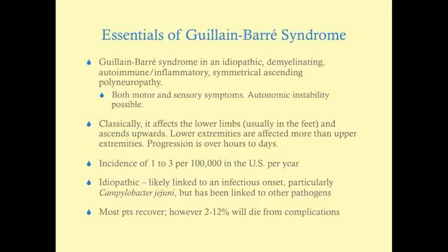It's demyelinating and autoimmune, meaning antibodies are created that attack the myelin sheath of the peripheral nerves. It's inflammatory — any autoimmune disease attacking parts of the body is an inflammatory process. It's symmetrical, meaning symptoms occur on both sides. Most importantly, it is ascending, which is what really sets it apart and helps determine this is Guillain-Barré rather than other neuropathies or motor synapse disorders.